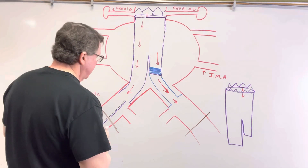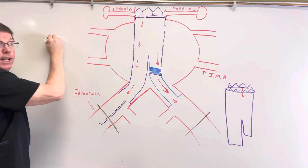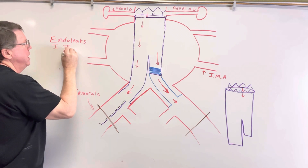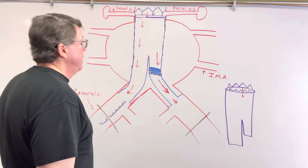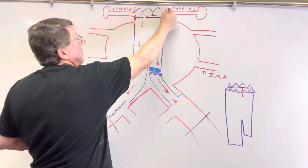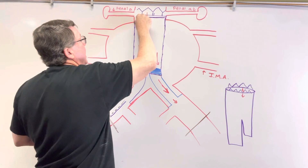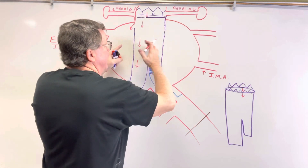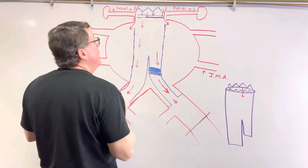Now, here's what can happen — you can get leaks, and we call these endoleaks. There are basically five types of endoleaks. Type 1 and type 3 need to be repaired. For a type 1 endoleak, let's say the anchor becomes unattached from the walls of the aorta — either the whole thing or just a portion. If a portion becomes unattached, blood can now flow down into the aneurysm, causing it to continue to increase in size.